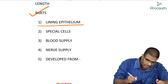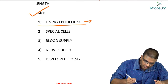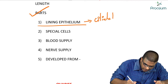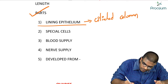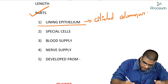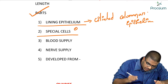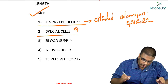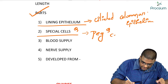Now, lining epithelium — what is the lining epithelium of the fallopian tubes? The lining epithelium is ciliated columnar epithelium. A very important MCQ point: the special kinds of cells present in the fallopian tubes are peg cells.